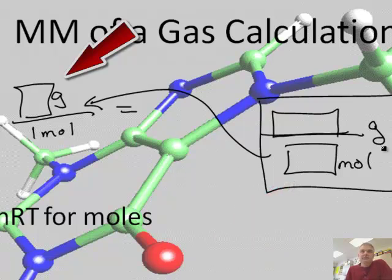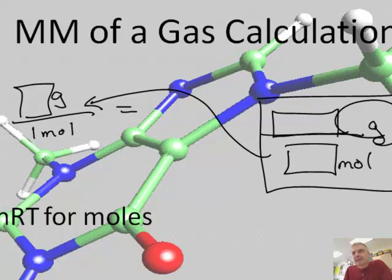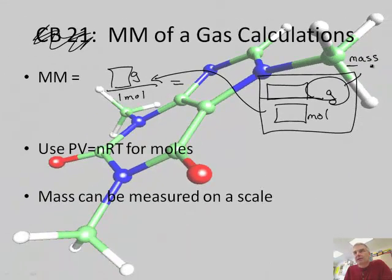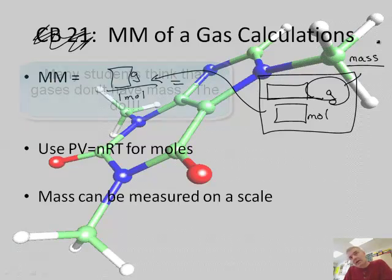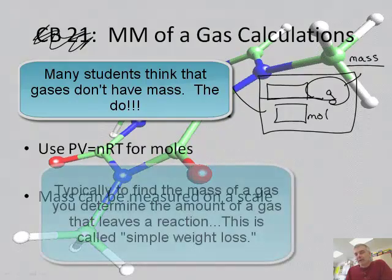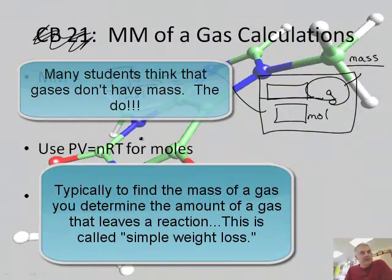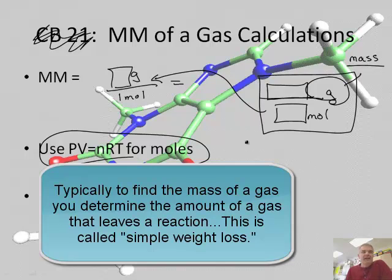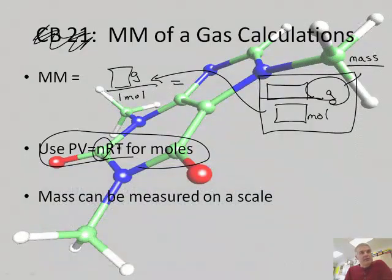Find the grams. The grams is something that's easily known. Usually you get this just from the mass data. It's easy to put something on a scale and weigh it, or sometimes weigh a gas. Typically, when you weigh a gas, you're weighing the lost mass, because gases usually leave a system. And to find moles, you're going to use the ideal gas law, PV equals nRT. And of course, n stands for moles.